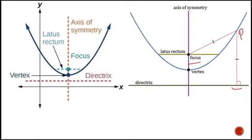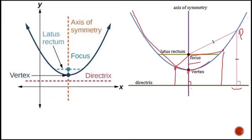The vertex is the point where the axis intersects the parabola, and the distance between the vertex and the focus is always equal to the distance between the vertex and the directrix. If we join all the moving points that maintain equal distance from the focus and directrix, we will get the parabola.